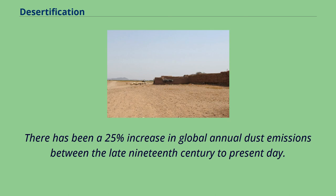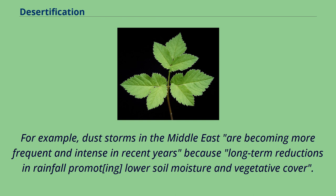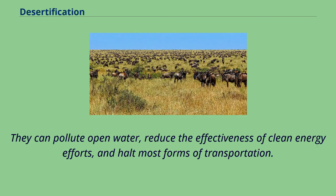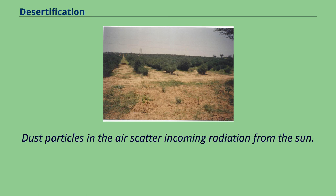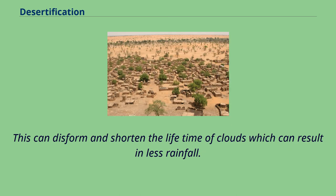There has been a 25% increase in global annual dust emissions between the late 19th century to present day. The increase of desertification has increased the amount of loose sand and dust that the wind can pick up, ultimately resulting in storms. Dust storms in the Middle East are becoming more frequent and intense in recent years because long-term reductions in rainfall promote lower soil moisture and vegetative cover. Dust storms can contribute to certain respiratory disorders such as pneumonia, skin irritations, and asthma. They can pollute open water, reduce the effectiveness of clean energy efforts, and halt most forms of transportation. Dust and sand storms can have a negative effect on the climate: dust particles scatter incoming solar radiation, providing momentary coverage for ground temperature while atmospheric temperature increases, which can disrupt and shorten the lifetime of clouds, resulting in less rainfall.